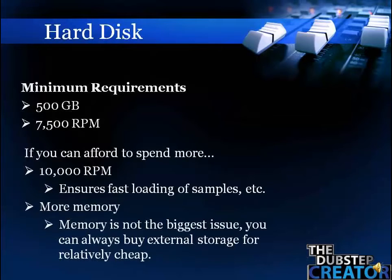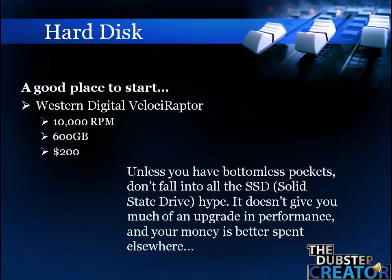You're going to want to get at least a 500 GB hard drive at 7,500 RPM — these are minimums. Memory isn't the biggest issue with a hard drive because you can always upgrade later; external hard drives are cheap and go up to 2 TB for a couple hundred bucks. If you can afford to spend more, go for a faster hard drive spinning at 10,000 RPM for loading samples quickly. A good place to start is the Western Digital Velociraptor — 10,000 RPM, 600 GB, and only 200 dollars.